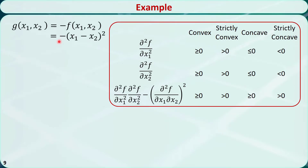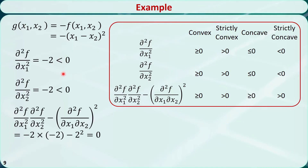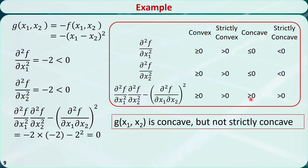Here is another example with two variables — it's just the opposite of the previous function. After calculation, we find these three items are negative 2, negative 2, and 0 respectively. Because the last one is 0, the function cannot be strictly convex or strictly concave. Also, because the first two items, negative 2 and negative 2, are not greater than or equal to 0, it cannot be convex. We can conclude that g is concave, but not strictly concave.